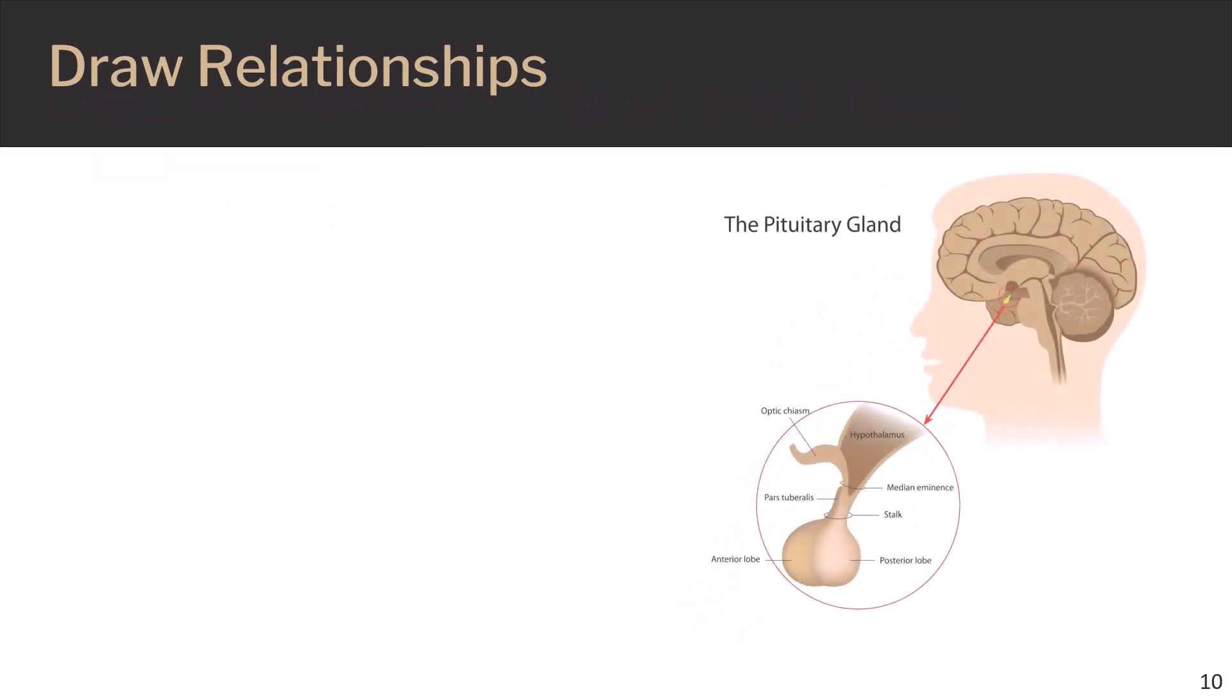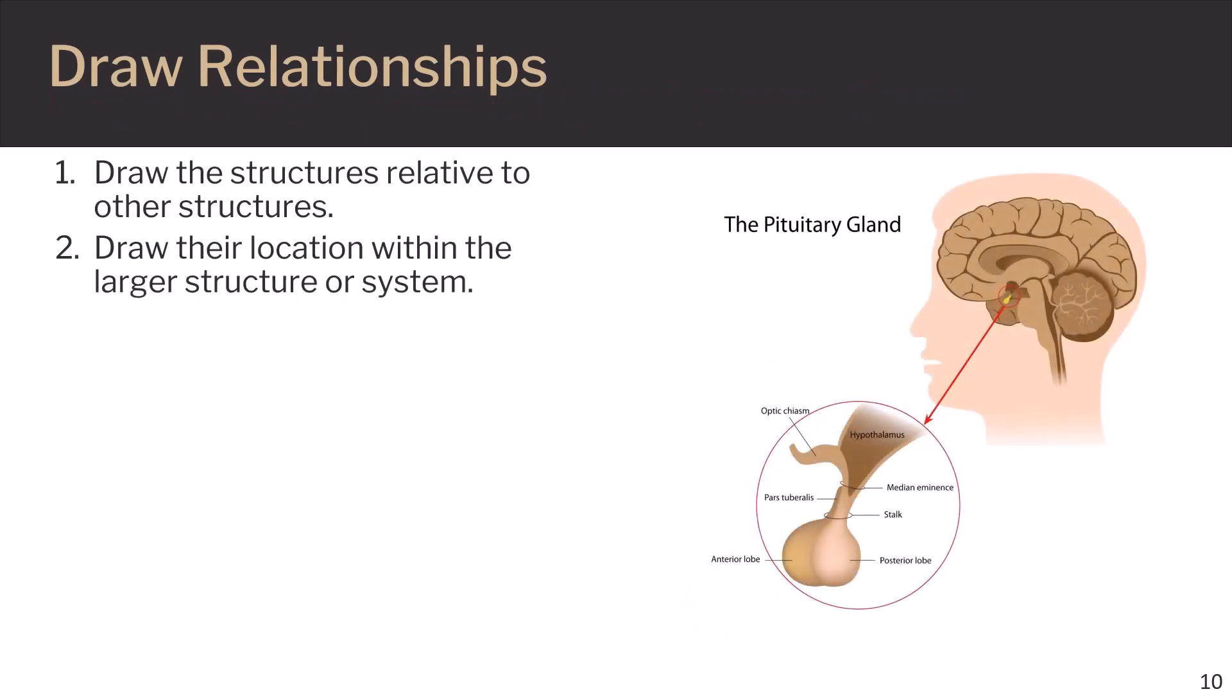Draw relationships. As you learn new structures, draw them relative to other structures to help you remember their location. The graphic here depicts the parts of the pituitary gland and its location at the bottom of the brain.